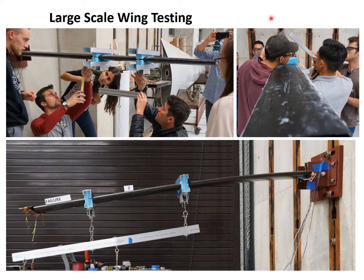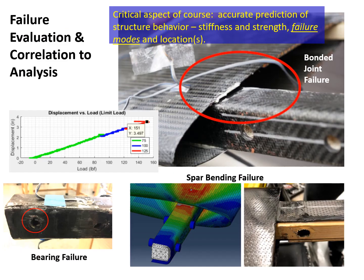The important part of the class is getting into the testing phase. Students have designed, analyzed, and predicted the behavior. We set this up in the lab, we test it at various levels of load, including up to failure. Finally, the very key part of the class is comparing our analysis to the behavior that was experimentally measured. A lot of failure occurs at the joints — can we predict that? The modeling can match these predictions pretty well if done right.